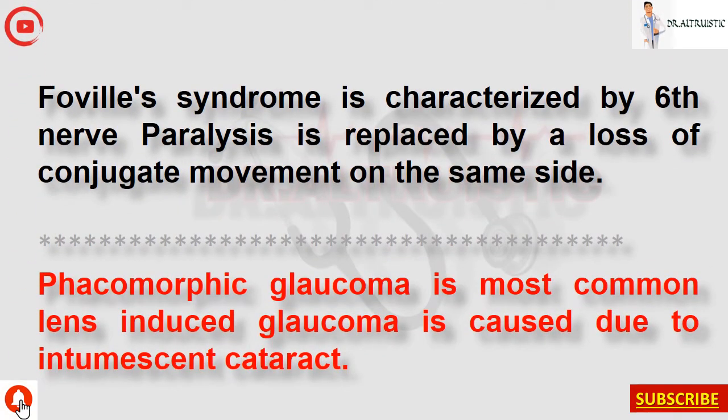Foville syndrome is characterized by sixth nerve palsy replaced by loss of conjugate movement on the same side. Phacomorphic glaucoma is the most common lens-induced glaucoma, caused by intumescent cataract.